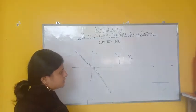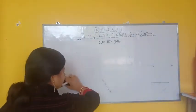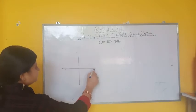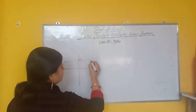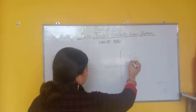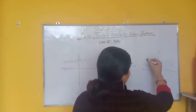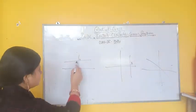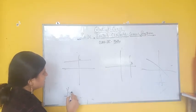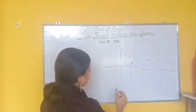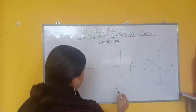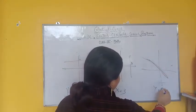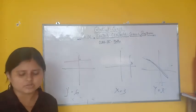इस graph से related जब higher classes में जाएंगे, competition वगैरह में पूछा जाता है: suppose this is the graph — what is the equation? Graph देखके easily बता सकते हैं: इसका equation है y is equal to 6, इसका equation है x is equal to 3, और अगर line center से जा रही है तो y is equal to x। So in this way you will get the values out of it.